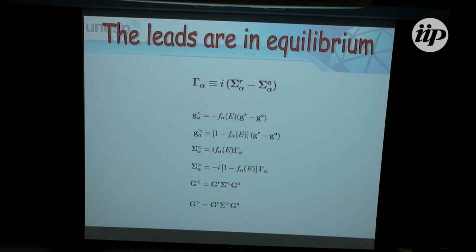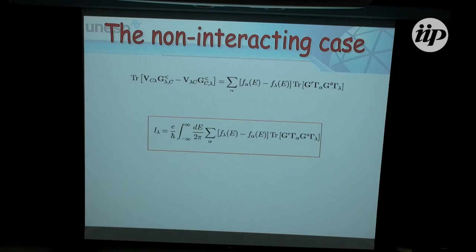For the non-interacting case, although we have four Green's functions, we can reduce this problem to dealing with only one. The lesser, the greater, and the advanced are all related to the retarded or to the advanced Green's function. And so this current actually reduces to this quantity here.